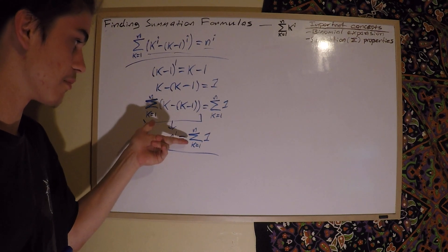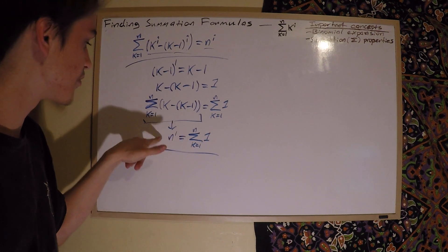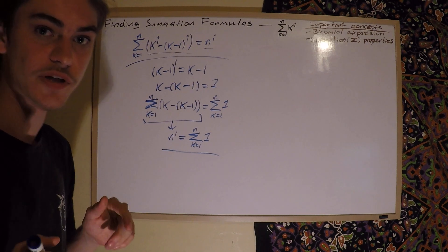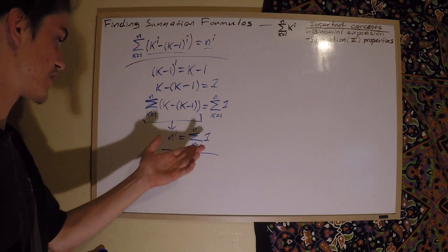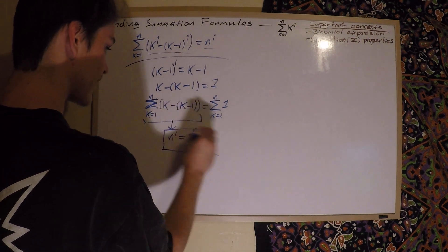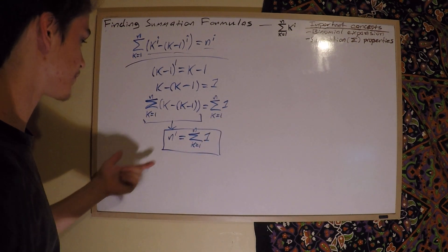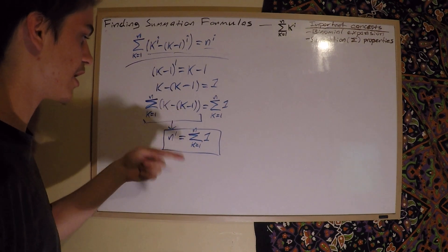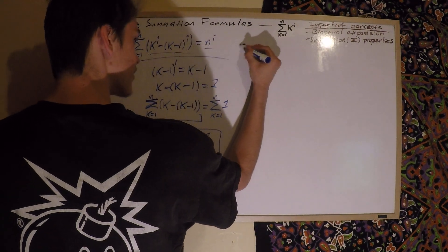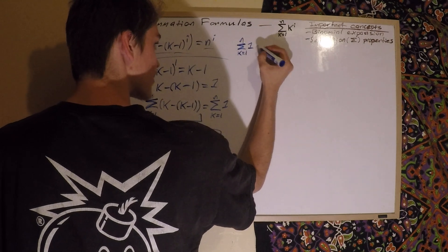There are n numbers between 1 and n. If we made it k equals 0, the answer would be n plus 1, because there are n plus 1 numbers between 0 and n, as opposed to n numbers between k equals 1 and n. So now we have this identity, and we can use it to prove the sum from k equals 1 to n of k. The sum of k equals 1 to n of 1 is equal to n.